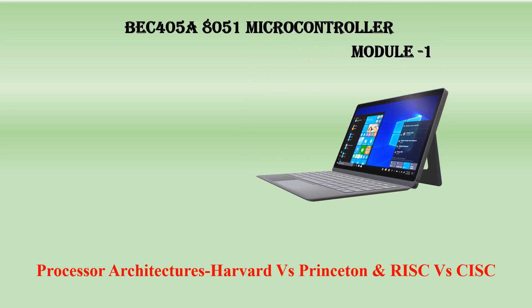In this series, we are going to see about the processor architecture — that is Harvard versus von Neumann, otherwise called Princeton architecture — and we will also cover RISC and CISC architecture. Come, let's go into the video.